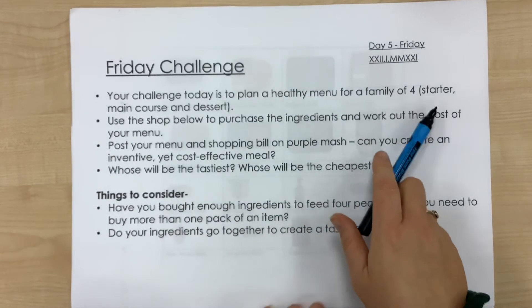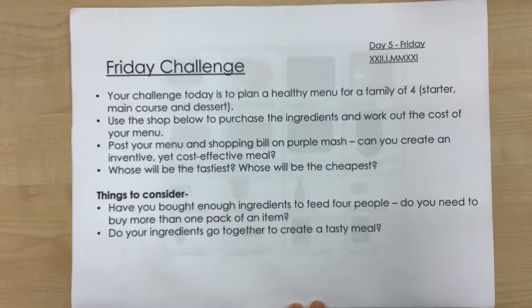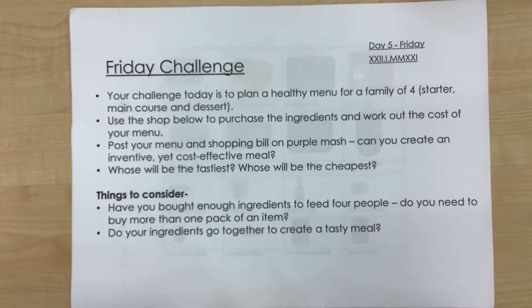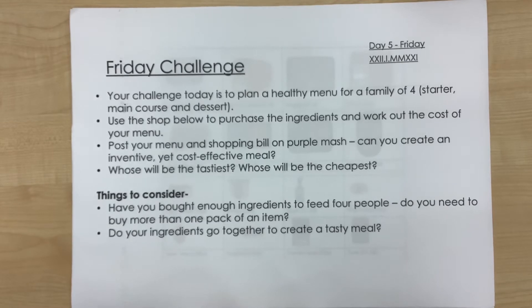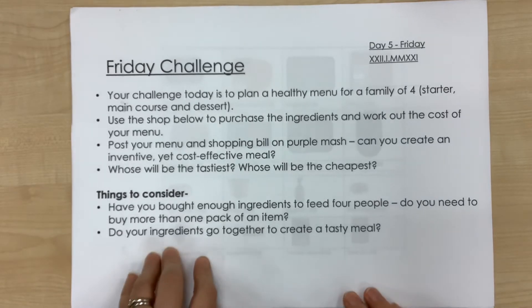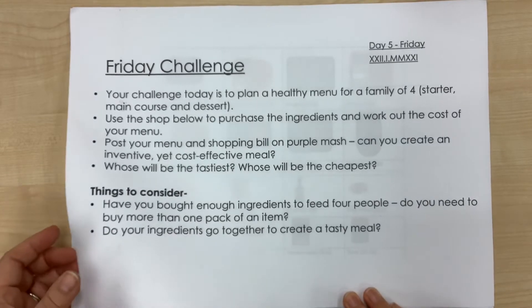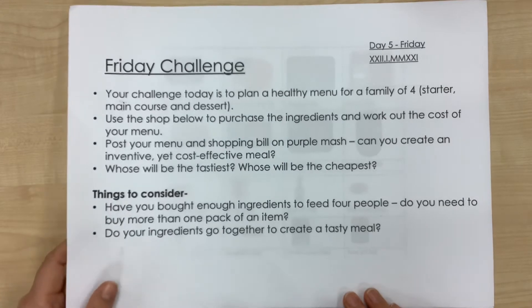What I would like you to do today is to plan a healthy menu for a family of four. I'd like you to plan a starter, a main course, and a dessert. So you will need to make sure that you have enough for four portions, and then you're going to use the shop to purchase the ingredients and work out the cost of your meal.